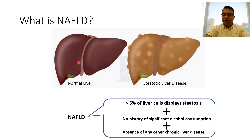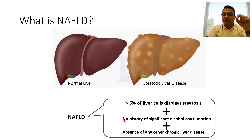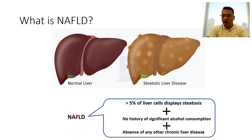As you can see here, this is a normal healthy liver and this is steatotic liver disease. Steatotic liver disease, or SLD, means when more than 5% of liver cells display steatosis or macrovesicular fat deposition, plus you rule out the presence of significant alcohol consumption, plus you also rule out any other chronic liver disorder — then you would say that condition is non-alcoholic fatty liver disease.